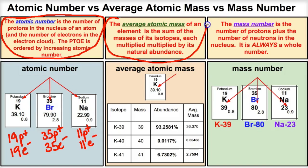The average atomic mass is a little bit different. At the bottom of each box on the periodic table you'll see the average atomic mass. It is the sum of the masses of its isotopes, each multiplied by its natural abundance. If you see a number with a decimal on the periodic table, that's a good indication it's an average atomic mass.